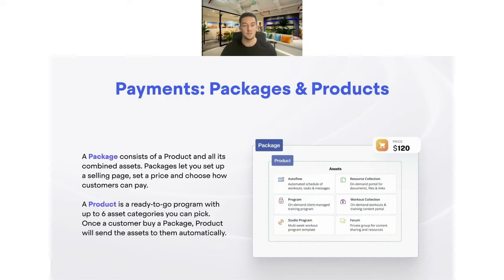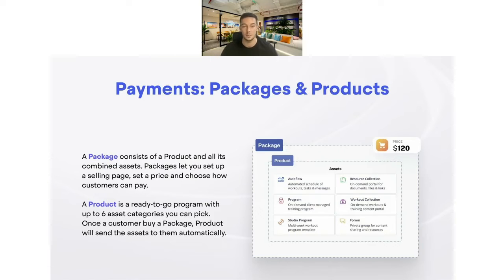The first thing I want to introduce you to is the concept that we have two main components to our payment system. The first one is the packages — this consists of products, which we will go through a bit later, but it's where you can build out different packages to sell to your clients. The other component is the products, where you will determine what people go into based off what they buy within that package. You can really tier these out and have multiple packages with different products connected, allowing you to scale your business and have all these different offerings running on autopilot.